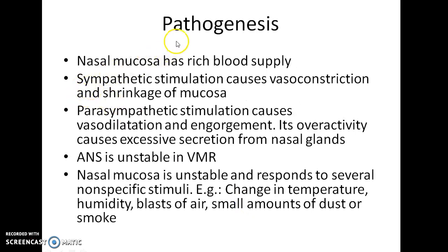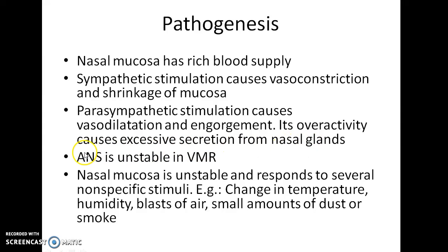Now let us see about the pathogenesis of vasomotor rhinitis. Nasal mucosa has a rich blood supply. Sympathetic stimulation of these vessels causes vasoconstriction and shrinkage of mucosa. Parasympathetic stimulation causes vasodilation and engorgement. Overactivity of the parasympathetic system causes excessive secretion from nasal glands. The autonomic nervous system is unstable in cases of vasomotor rhinitis.